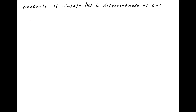We know that modulus of x is equal to plus x when x is greater than or equal to 0, and is equal to minus x otherwise. Therefore, f(x), which is equal to sin of modulus of x minus modulus of x, is equal to sin x minus x when x is greater than or equal to 0, and is equal to minus sin x plus x when x is less than 0.